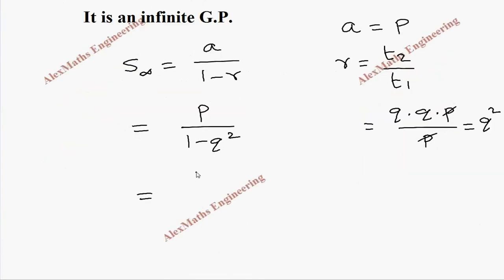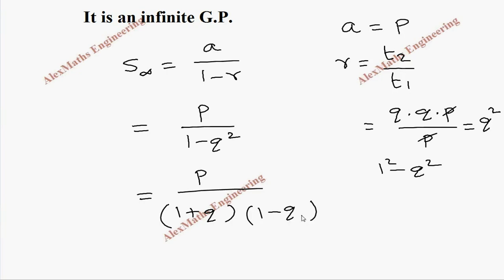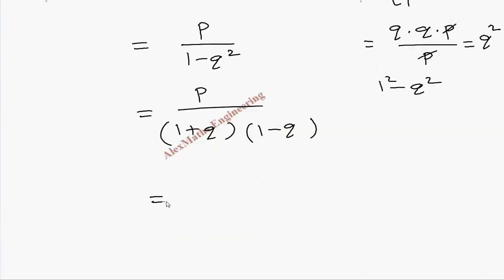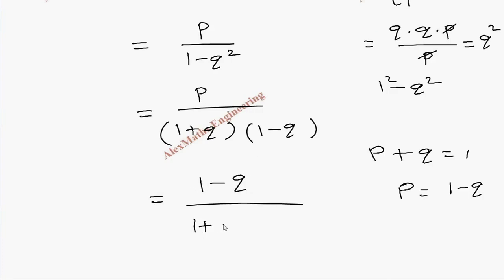We can further simplify: 1 − Q² can be written as (1 + Q)(1 − Q) using the identity A² − B² = (A+B)(A−B). Also, since P + Q = 1, we have P = 1 − Q. So the numerator 1 − Q cancels with the denominator factor, and we are finally left with 1 / (1 + Q).